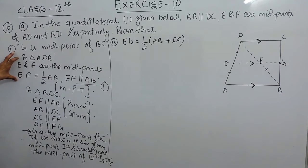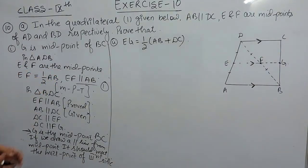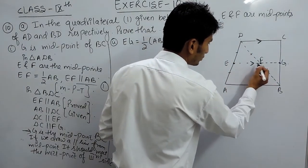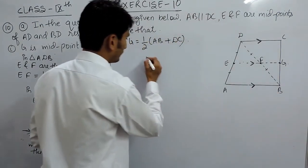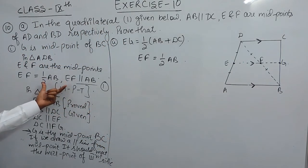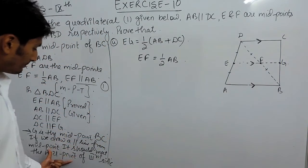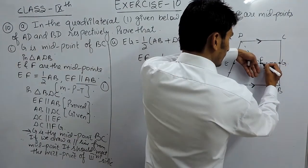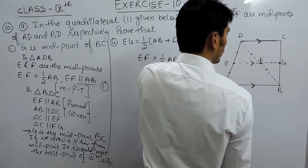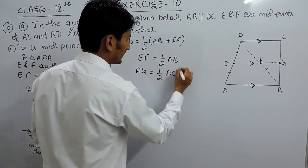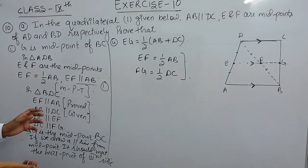Now let's prove the second part. We have proved that EF is equal to half of AB, because E and F are the midpoints of triangle ADB — this is from our first equation. Similarly, in triangle BDC, F and G are also midpoints, so by the midpoint theorem, FG must be equal to half of DC. These two results are proved by the midpoint theorem.